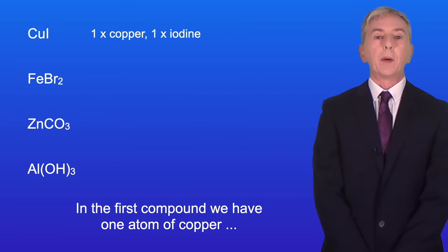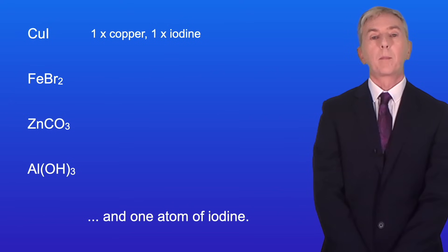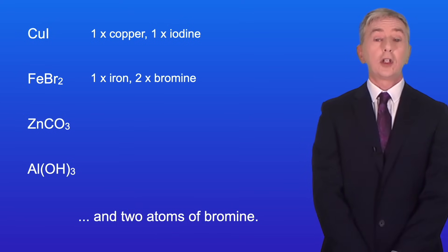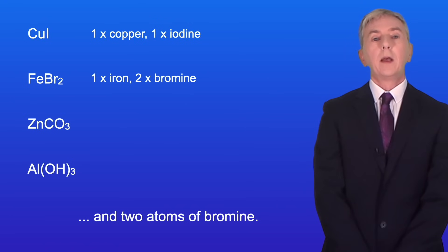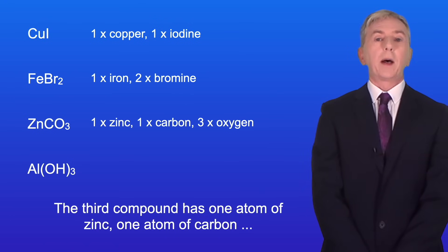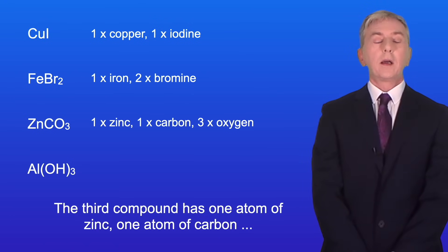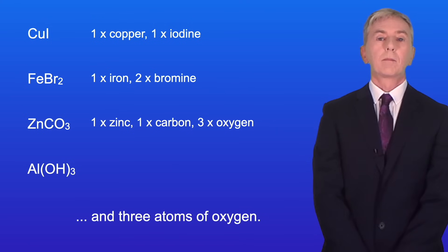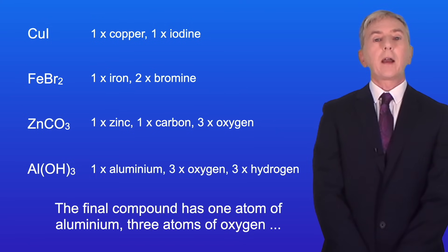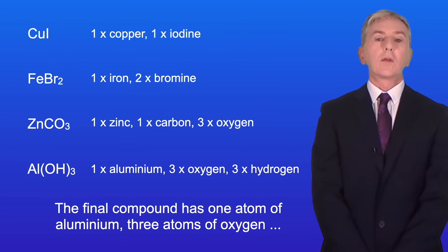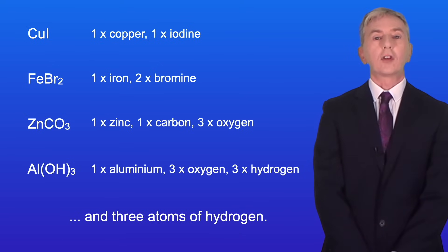Okay, in the first compound we have one atom of copper and one atom of iodine. In the second compound we have one atom of iron and two atoms of bromine. The third compound has one atom of zinc, one atom of carbon, and three atoms of oxygen. And the final compound has one atom of aluminium, three atoms of oxygen, and three atoms of hydrogen.